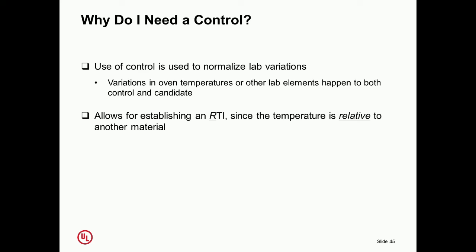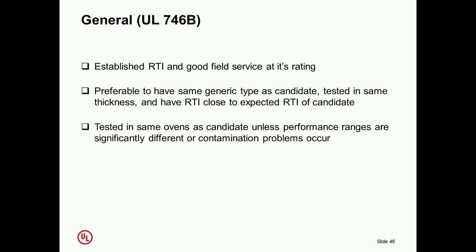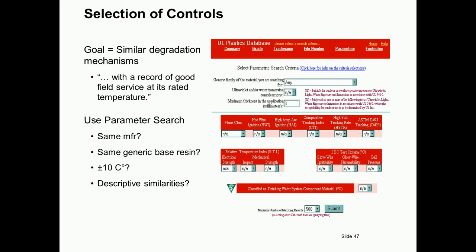We talked about relative thermal index. There's a control that we use for that testing. We're looking at a relative measurement to another material, so we'll be very careful on the selection of a control and comparison. In general, we use 746B as our test method. We use it because there's a lot of data going back many years on RTIs and a large material database. We can start to do these evaluations quickly. We don't have to go to the full 10,000 hours, or in some cases maybe up to 100,000 hours of actual multiple point measurements. We can do it by comparing to known materials.